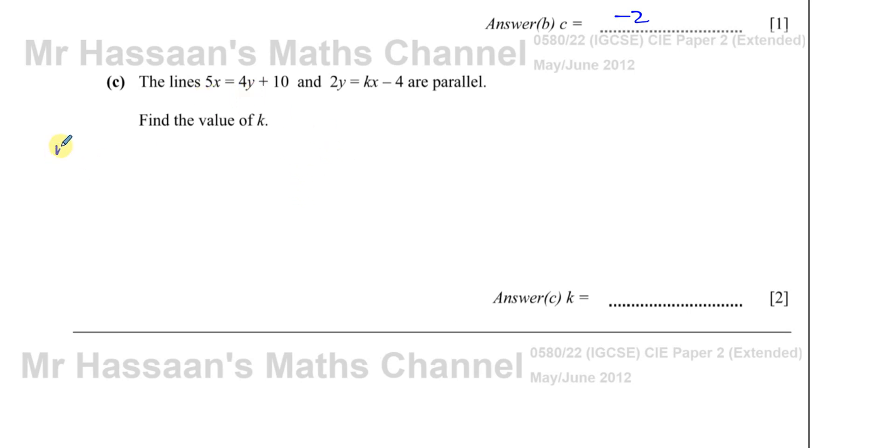How do we read the gradient of a line from its equation? We rewrite it in the form y = mx + c. We make y the subject. When you make y the subject, the coefficient of x is the gradient. So if we take the first line, 5x = 4y + 10 and we make y the subject, you have 5x - 10 = 4y. Divide both sides by 4.